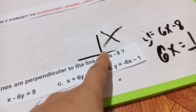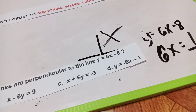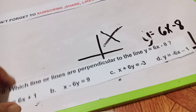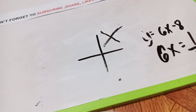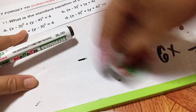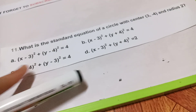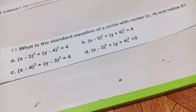The reciprocal of 6x for a perpendicular line gives us negative 6x minus 1, so that is the perpendicular line. Now let's have number 11. The problem is: what is the standard equation of a circle with center (3, negative 4) and radius of 2?